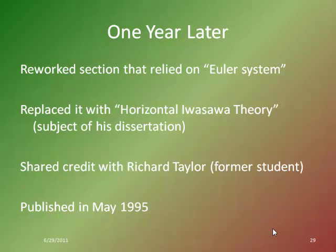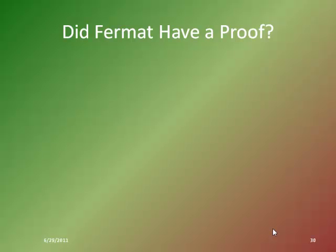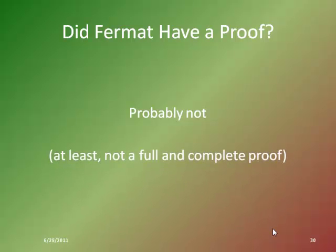So Fermat's Last Theorem is finally proved, which brings us to the question: did Fermat actually have a proof? He claimed he did, saying the margin was too small to contain it. Based on the difficulty and variety of the math involved — relying on mathematics that wasn't even available to Fermat — the answer is probably not. Much like Euler, who had a proof for n equals 3 that turned out to be slightly flawed, Fermat may have had something, but it wouldn't be anything we would consider complete and robust by modern standards.